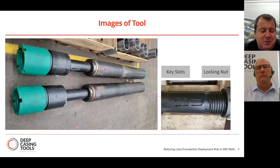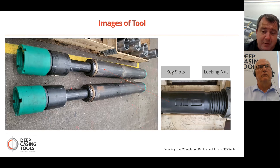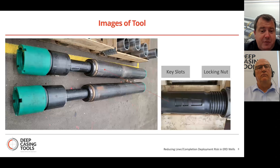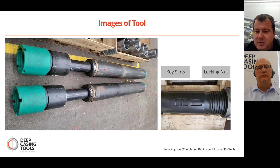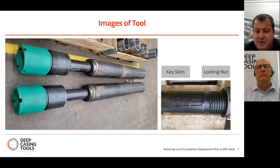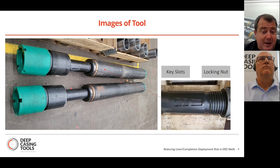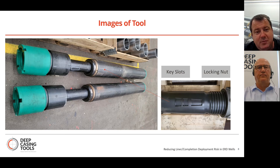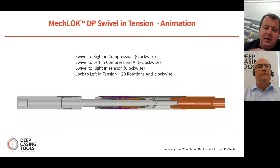Here are the tools as they look in the flesh — a pair of tools sent out to Australia about a month ago, one of which ran in hole yesterday successfully. They're a very robust design. On the right-hand side you can see the key slots, and once you do your 25 turns, the locking nut goes over the key slots and the locking dogs sink into the recesses, permanently locking the tool. We have these tools available in the UK and the Middle East, with a couple working down in Australia currently.